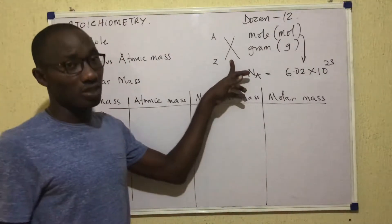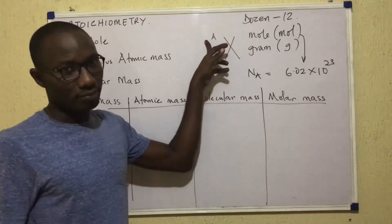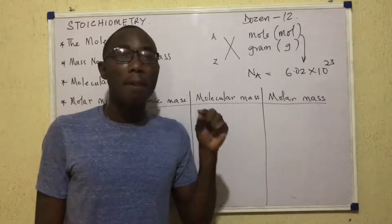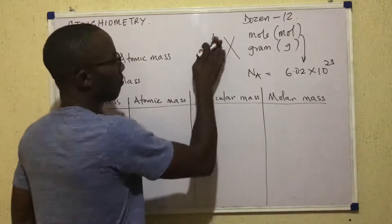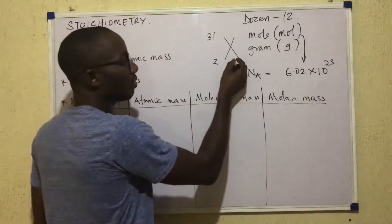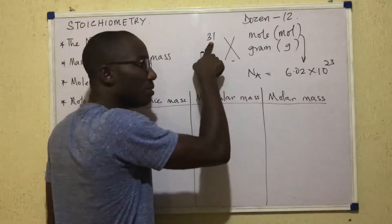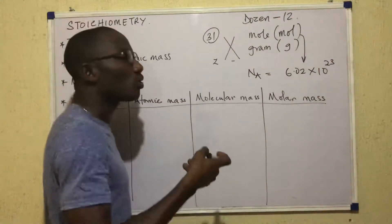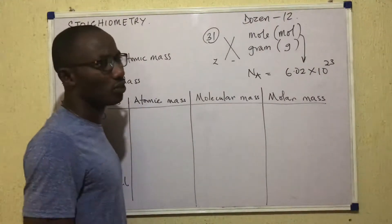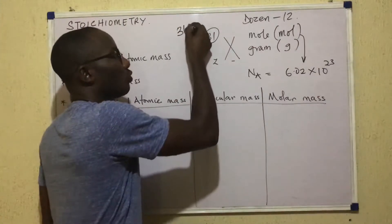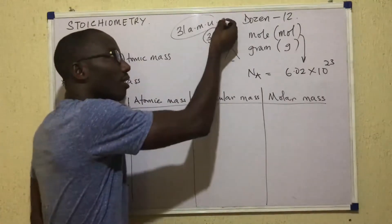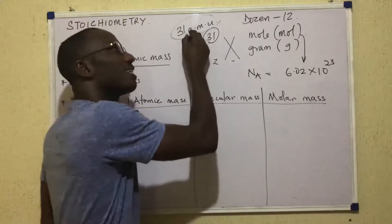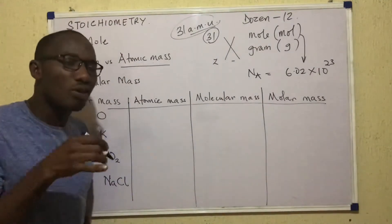Consider an element written in symbol as X. The number up here represents the number of protons and neutrons that atom has, and that number is referred to as mass number. For example, if A equals 31, then this atom has a mass number of 31, meaning it has a total of 31 protons and neutrons in its nucleus. But what do those 31 protons and neutrons weigh? Approximately, their total weight is 31 AMU. The mass of those 31 particles is what we refer to as atomic mass. So atomic mass is a mass and it has a unit — atomic mass unit, AMU. You can also write dalton; one dalton is one AMU, abbreviated DA.